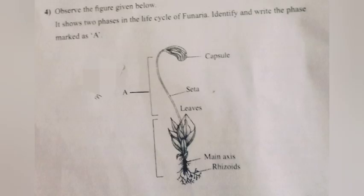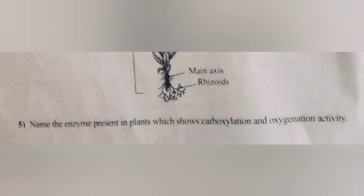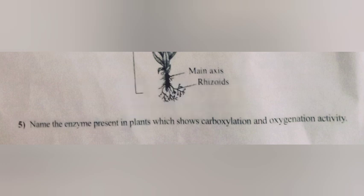Question 4. Observe the figure given showing phases in the life cycle of an area. Identify and write the phase marked as A. Answer: Sporophytic phase. Question 5. Name the enzyme present in plants which shows carboxylation and oxygenation activity. Answer: Rubisco.